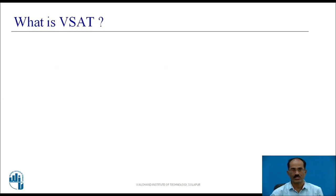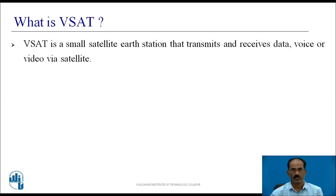What is VSAT? VSAT is a small satellite Earth Station that transmits and receives data, voice, or video via satellite. Basically, it is an Earth Station used to transmit and receive data, voice, etc., via satellite.